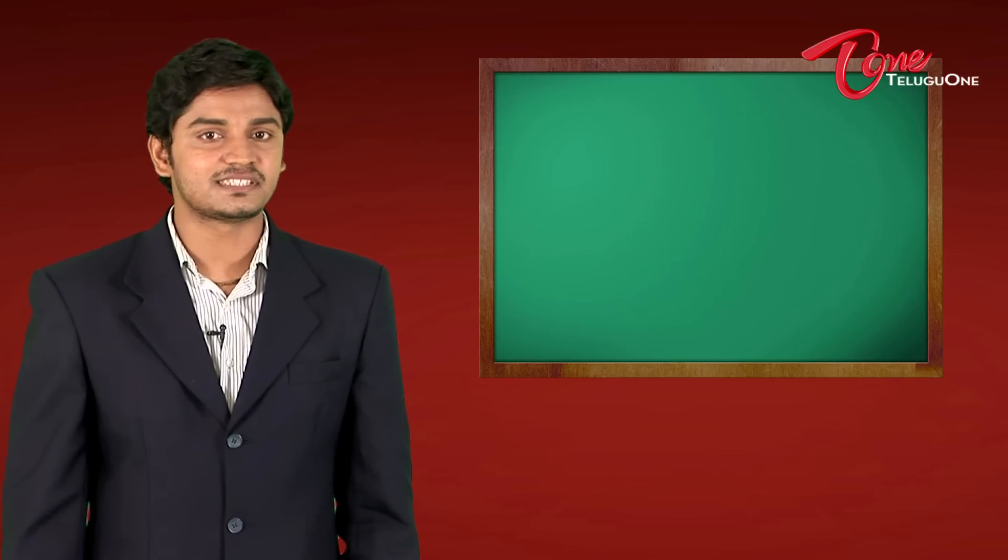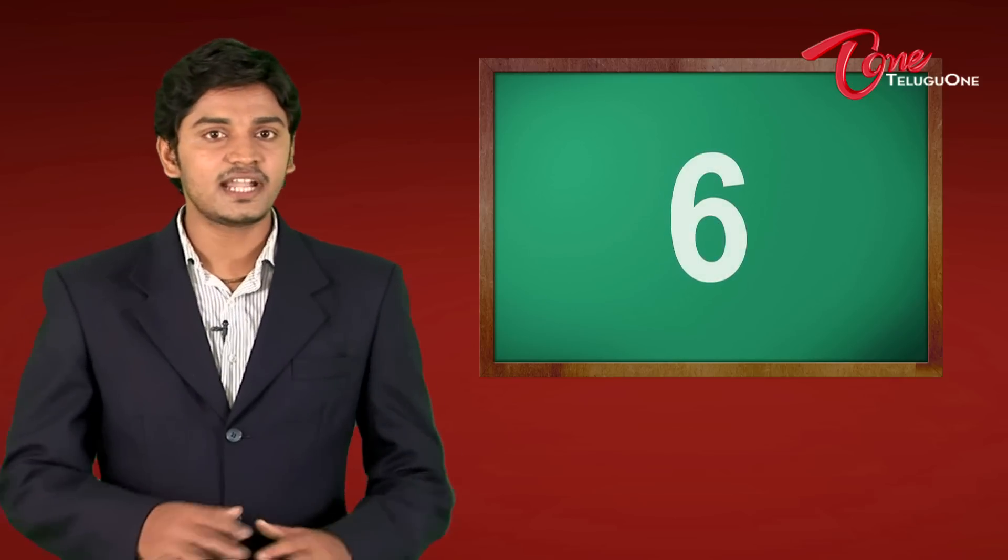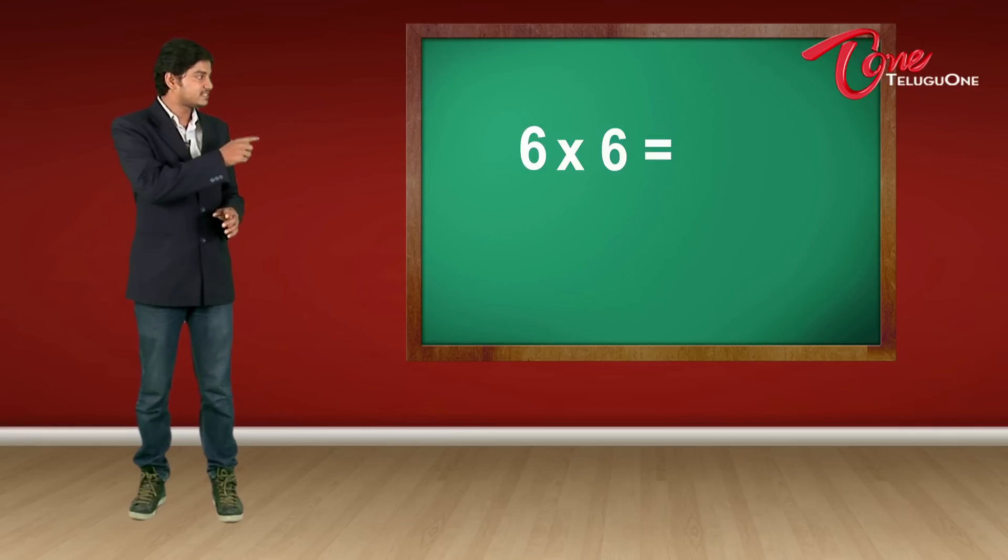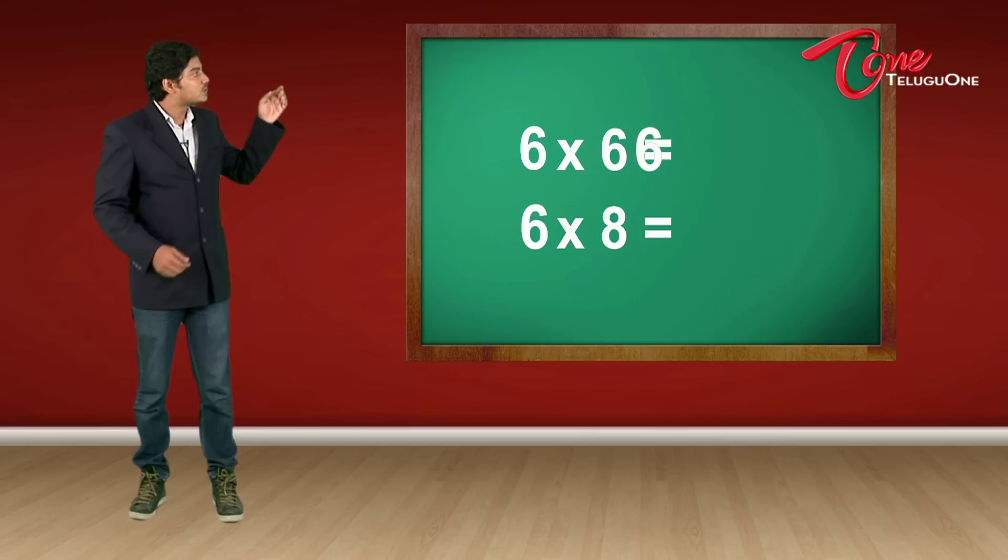Now, let us go to table 6. Now, you don't have to memorize the entire table 6. We're going to learn only 6 times multiplied by 6, 6 times multiplied by 8. Okay? So, 6 times 6. So, I write my 6 as it is. Then, for 6 times 8, I write 8 as it is.